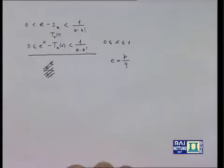Prima di sfruttare questo risultato, voglio dimostrare l'affermazione fatta nella precedente lezione: il numero e — che qualcuno chiama numero di Nepero, ma forse più correttamente andrebbe chiamato numero di Eulero — non è razionale, cioè non è esprimibile sotto forma di frazione. Come faremo? Per assurdo: supponiamo che e si possa scrivere come P/Q, con P e Q numeri naturali, e andiamo a trovare una contraddizione.